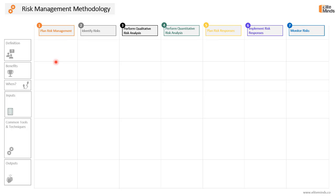Starting with the first step, planning risk management — it's the process of defining how to conduct risk management activities for a project. In this process, we will think in advance how we will be conducting all the risk management activities throughout the project, starting with the planning through the execution till the monitor and closure of the project risks.